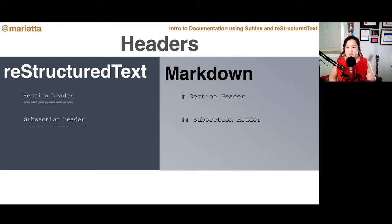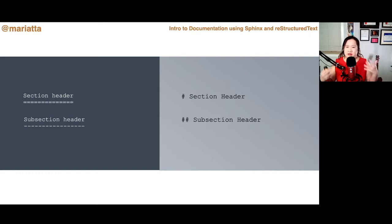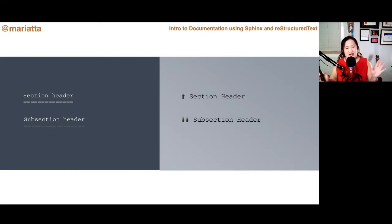Let's start with something easy: a comparison of how you'd write section headers. On the left is reStructuredText and on the right is Markdown. In reStructuredText, instead of the pound sign, you add underlines. If I presented the text without telling you which was which, which looks more obviously like section headers? Personally, I find the underlines a clearer signal that these are titles. The pound sign — if I didn't know this was a Markdown file — I would think those are code comments, not headers.